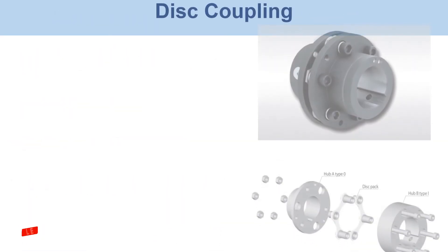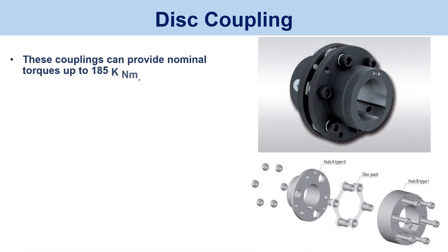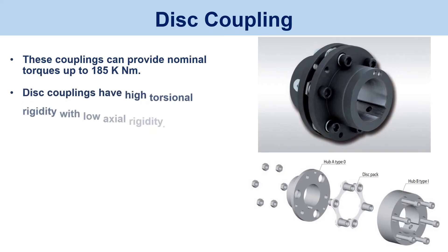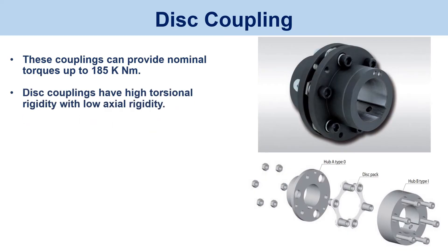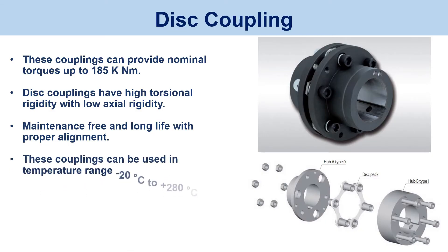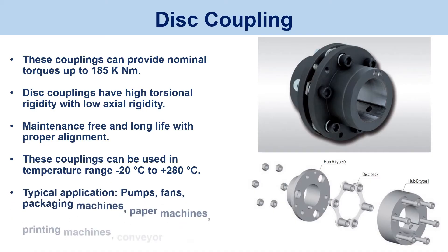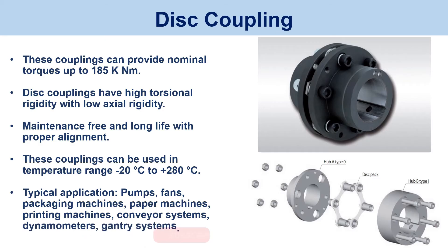Disc coupling. These couplings can provide nominal torques up to 185 kNm. Disc couplings have high torsional rigidity with low axial rigidity. They are maintenance-free and long-life with proper alignment, and can be used in a temperature range from -20°C to +280°C. Typical applications include pumps, fans, packaging machines, paper machines, printing machines, conveyor systems, dynamometers, sensors, and gantry systems.